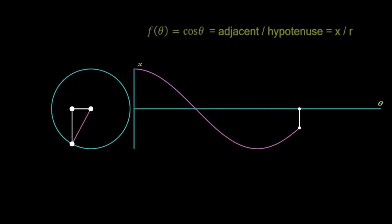So the function we have generated here is f of theta equals cos theta, and it's given by the ratio of the adjacent to the hypotenuse, which is the x distance divided by the r distance for each of the angles in our circle.